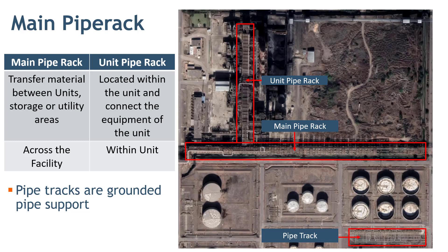Unit pipe racks are located within the unit and connect the equipment of that unit only. So now you know that main pipe racks are spread across the facility, whereas unit pipe racks are within the unit.